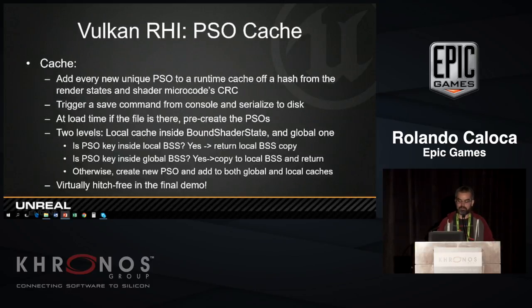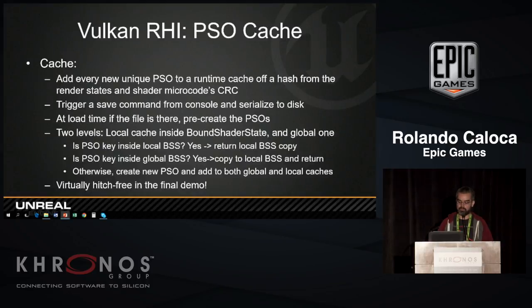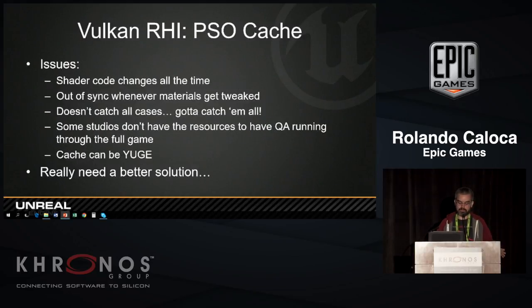For ProStar, we were hitching at the beginning — the first run through was hitching a lot because we were making many PSOs. So what we ended up doing is making a pipeline cache. Every time we have a new PSO, we make a hash of the render states, the render target format, the vertex layout, and a CRC of the microcode. We store those into the global cache, and at some point when you're done with your demo or game, you type a console command and it saves to disk. At load time we always try to load that file. There's a local cache inside the bound shader state and a global one. In the end, we ended up hitch-free on the final demo. All this is common to Android and PC.